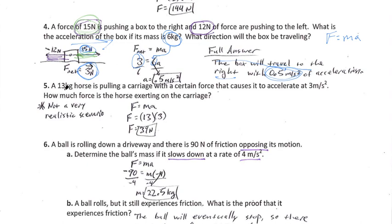Number 5 is a little bit of a breather. We've got a 13 kilogram horse object pulling a carriage with a certain force, causes it to accelerate at 3 meters per second squared. How much force is the horse exerting? Well, we know its mass. We know the acceleration of the horse is 3 meters per second squared. That means the force must be 39 newtons — simply 13 times 3. We're good to go.